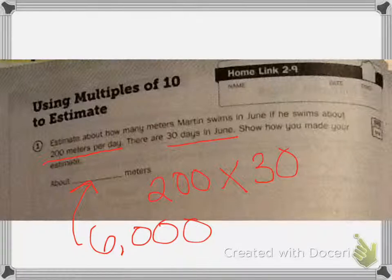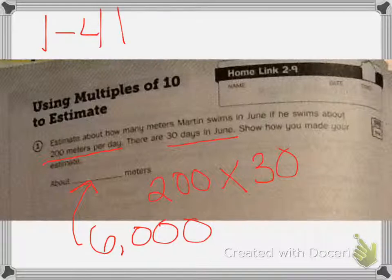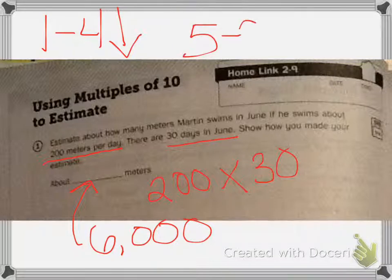Make sure you do the bottom part. That's estimate and solve. Reminder: 1 through 4, round down. 5 through 9, round up.